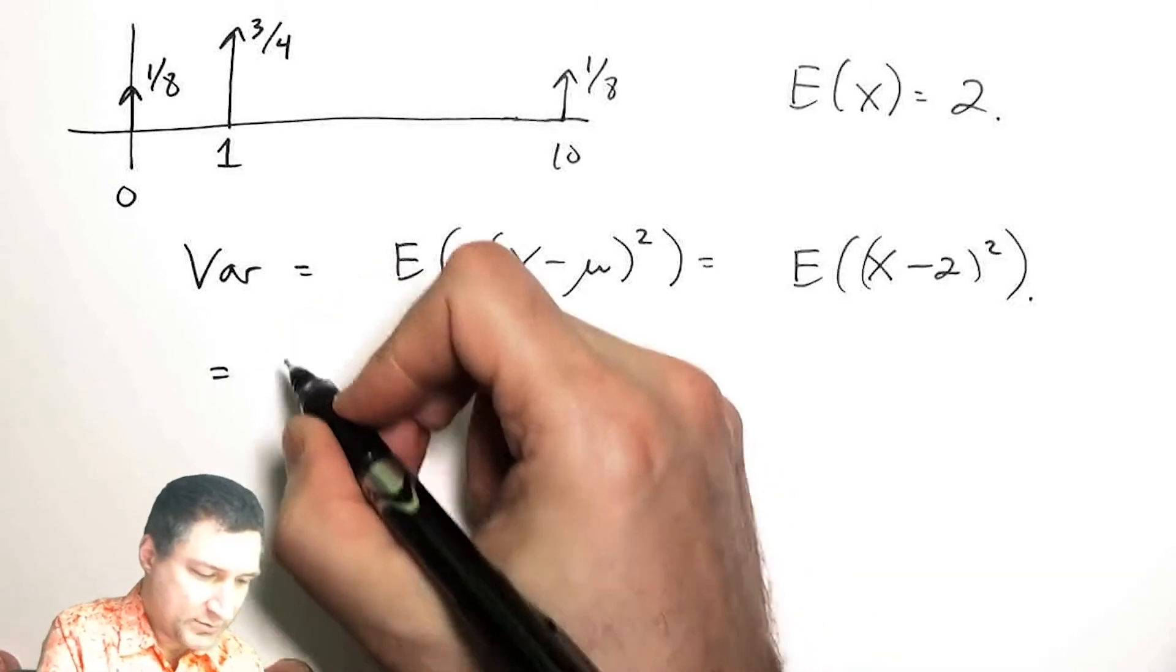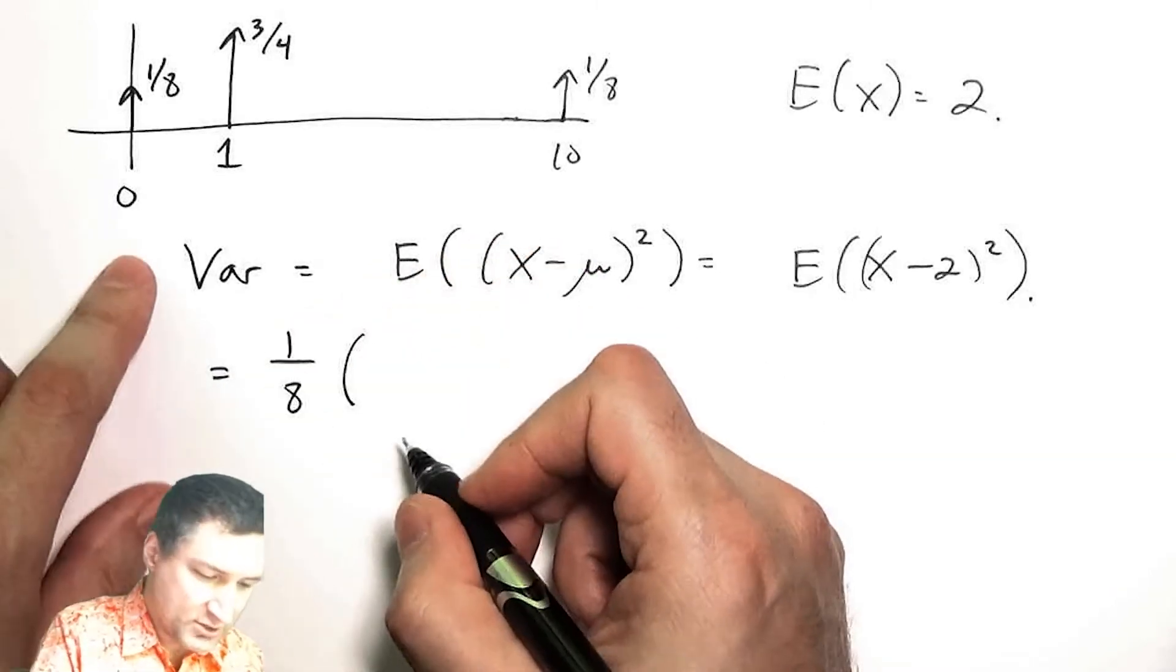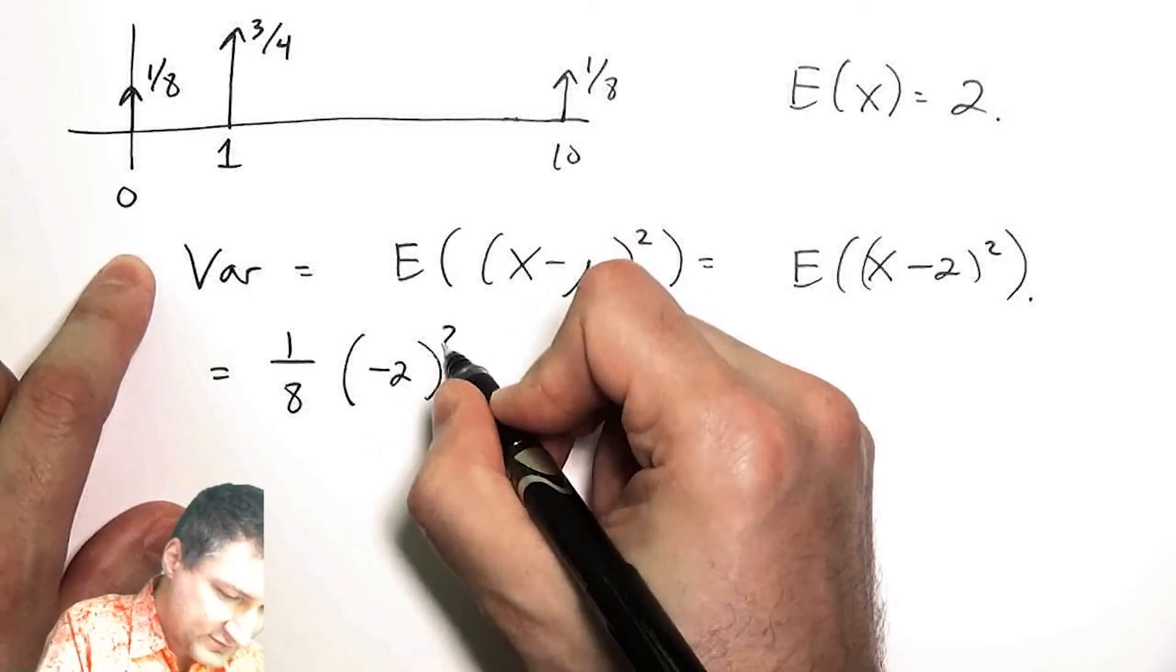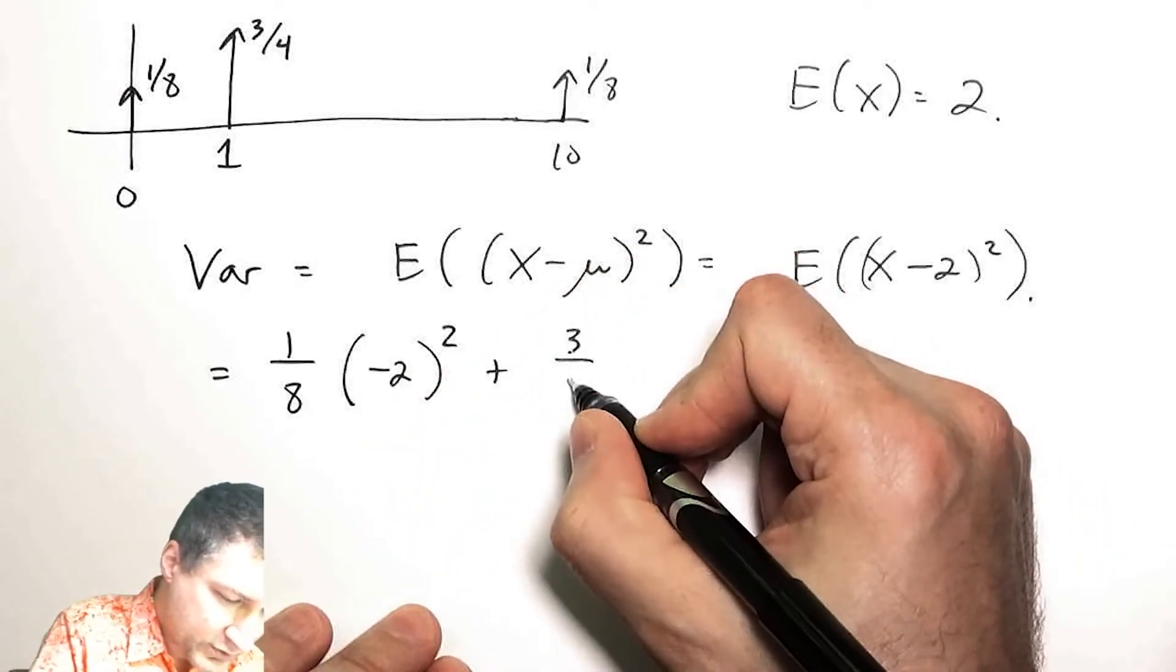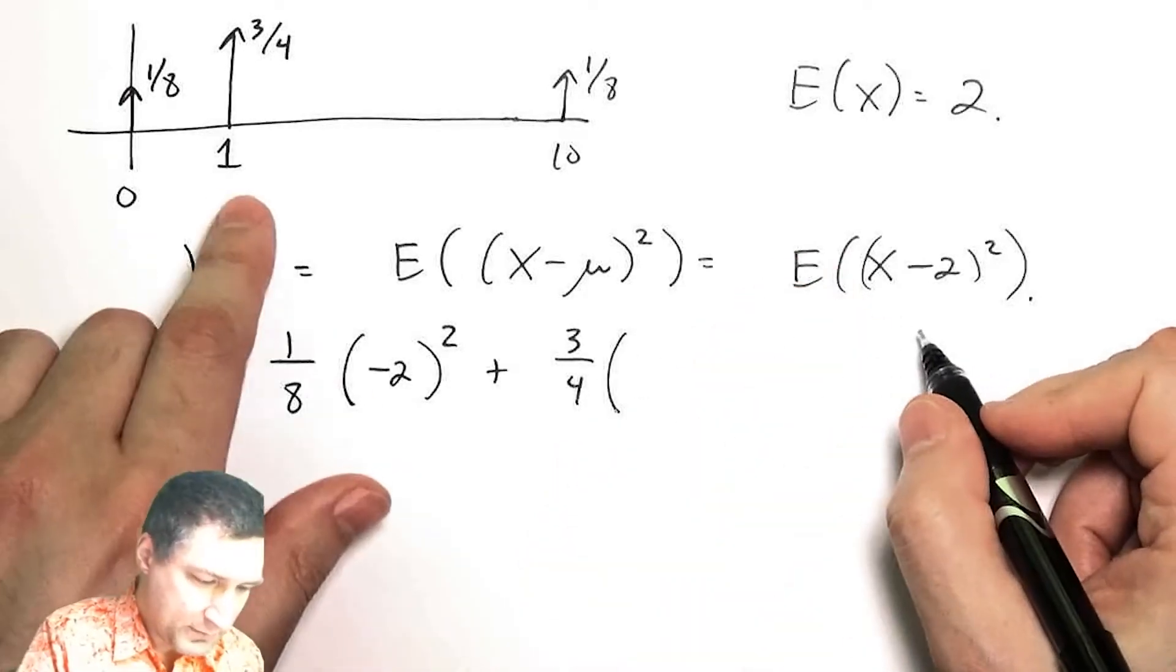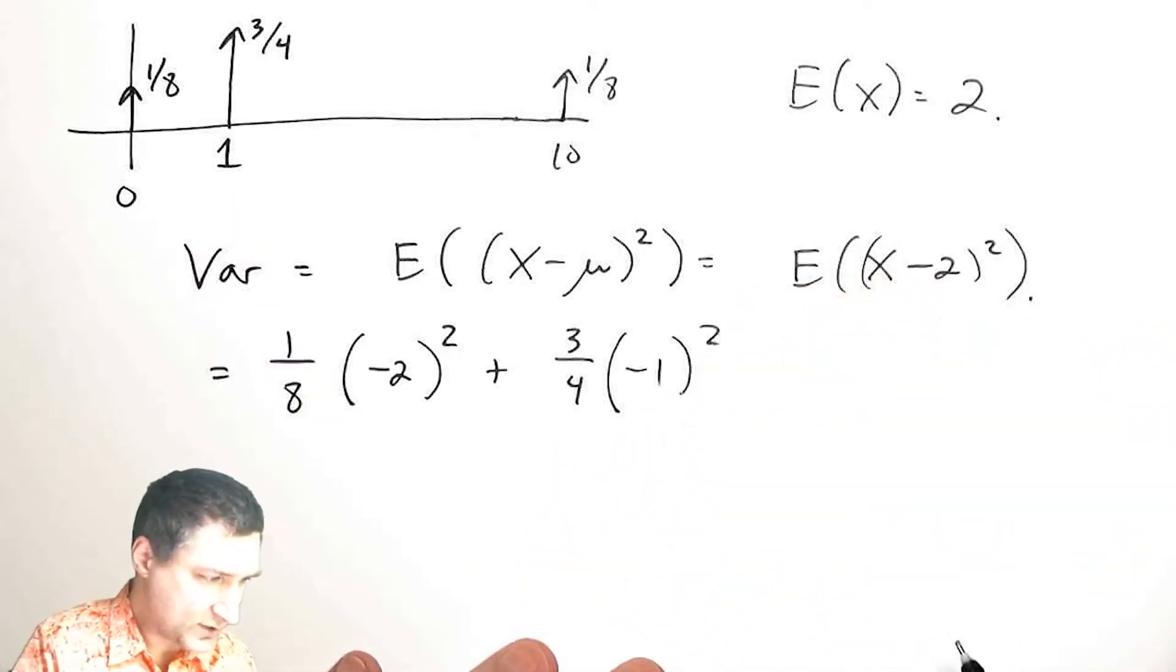I have (0 minus 2) squared, negative 2 squared. With probability 3/4, I have (1 minus 2) squared, which is negative 1 squared.